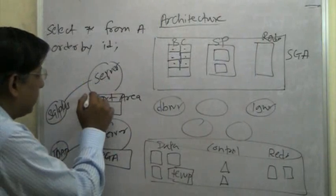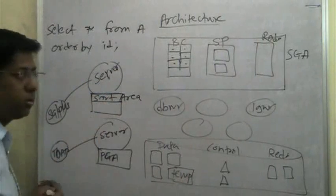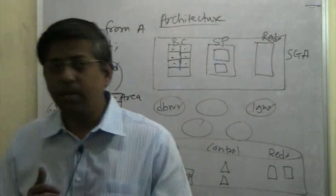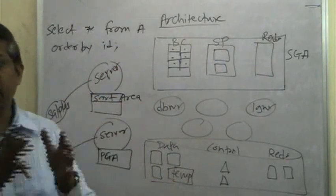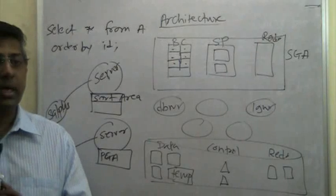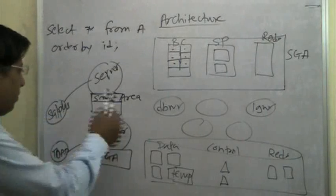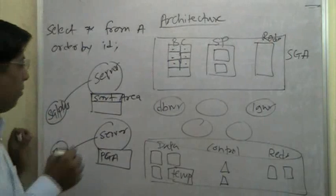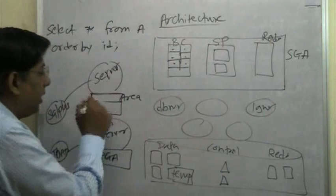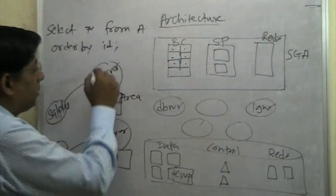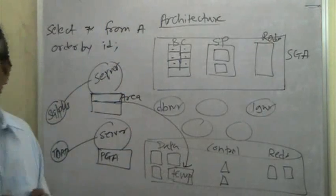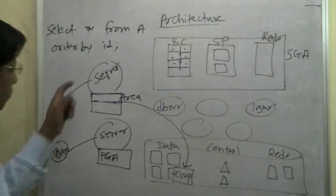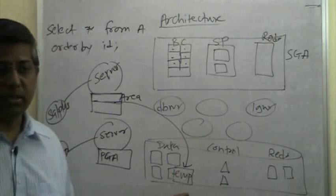Sort area is an area inside the PGA where the sorting happens. And now, as I said, since it is a very small area and if you want to sort a table which is having 1 million rows, obviously this area is not enough to store the sorting results before they are displayed to the user. So, when the sort area is not enough for the sorting, the server process will put those temporary results in the temp table space.